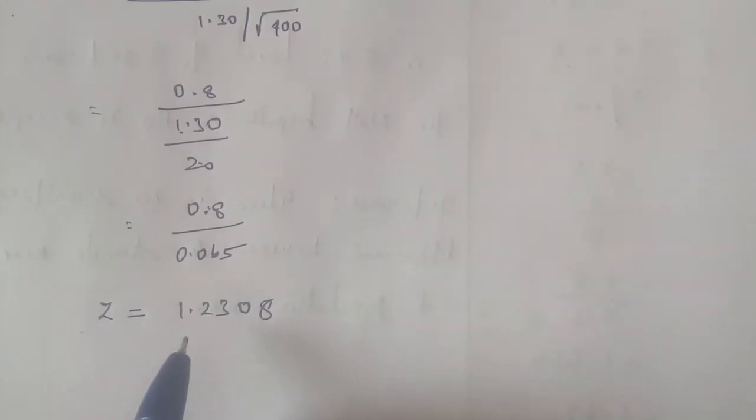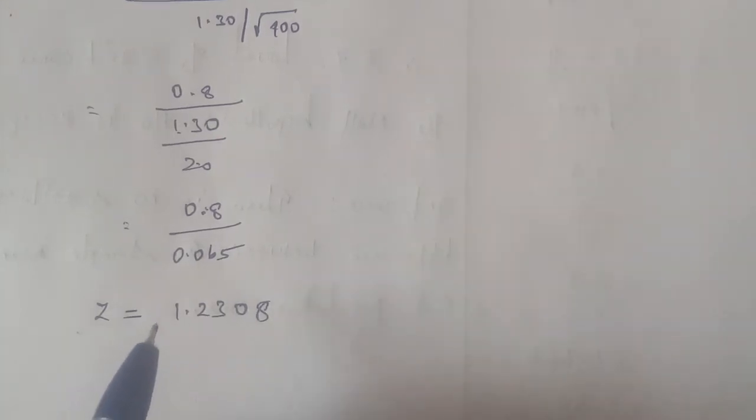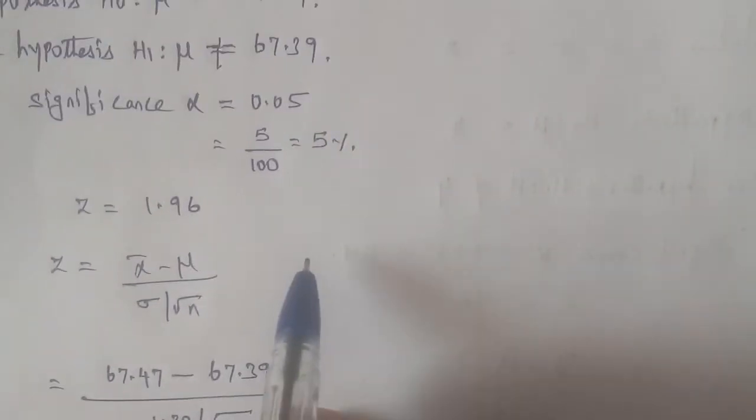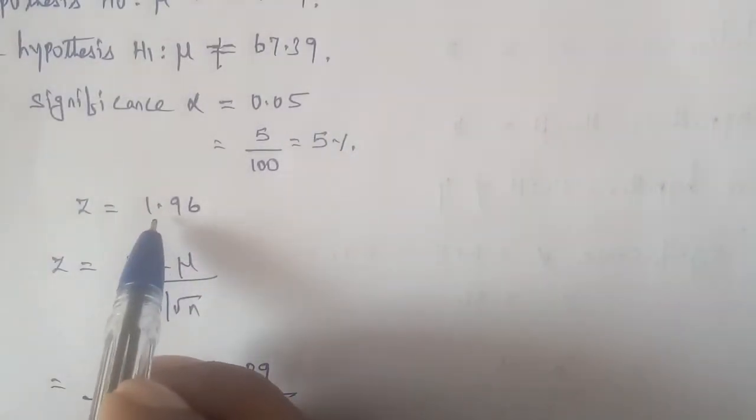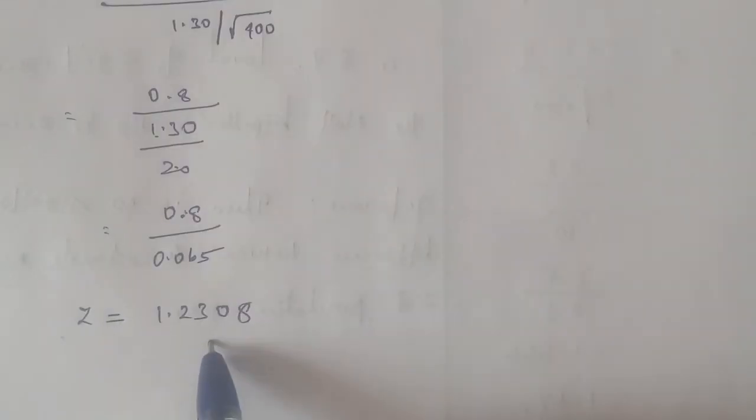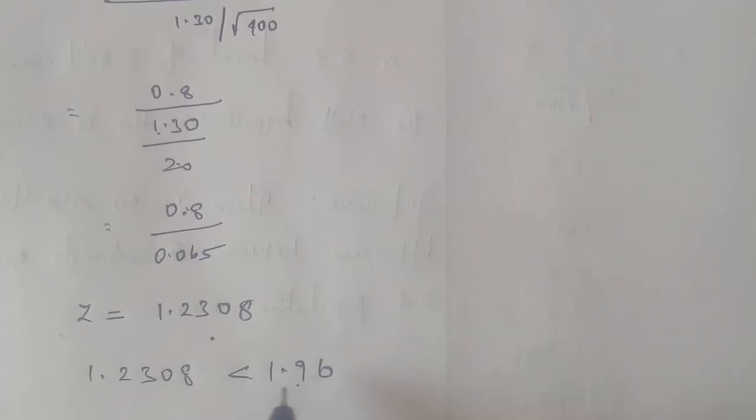Accept or reject: the calculated value is 1.2308, and the critical value is 1.96. Since 1.2308 is less than 1.96, the null hypothesis is accepted.